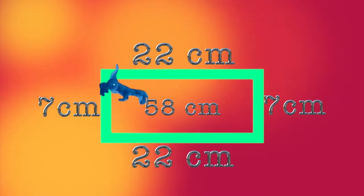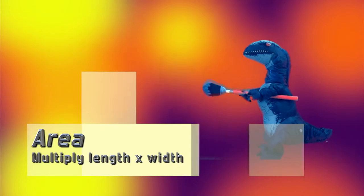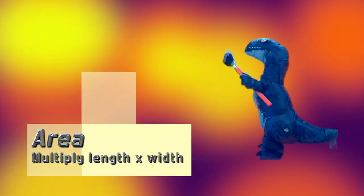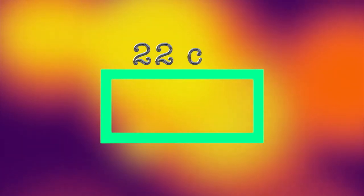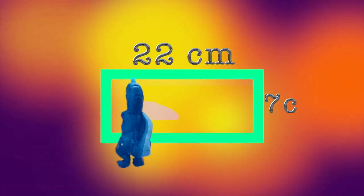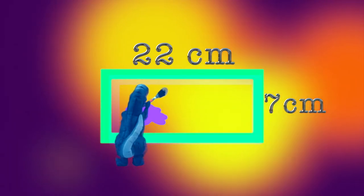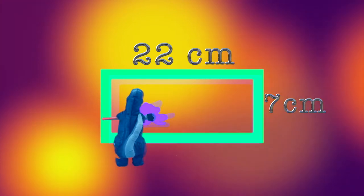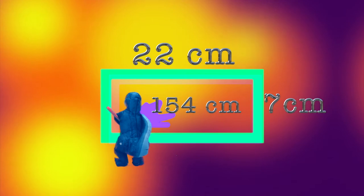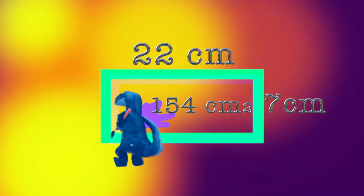58 centimeters. So, Shape-O-Saurus, what about area? Area is how much surface a shape covers — like if we were painting the whole thing or covering it with carpet or fabric. To figure out the area, you multiply the length times the width. For this same rectangle, we would multiply its length of 22 centimeters times its width of 7 centimeters. That gives us a total of 154 square centimeters. We say square because we are measuring in two directions.